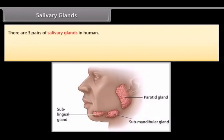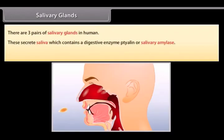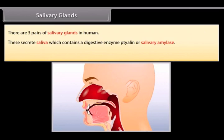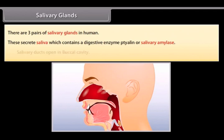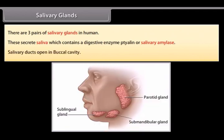There are three pairs of salivary glands in humans. These secrete saliva which contains a digestive enzyme called salivary amylase. Salivary ducts open into the buccal cavity.